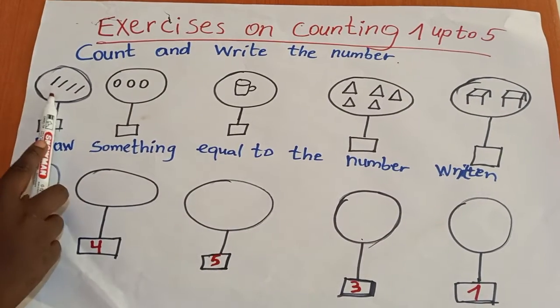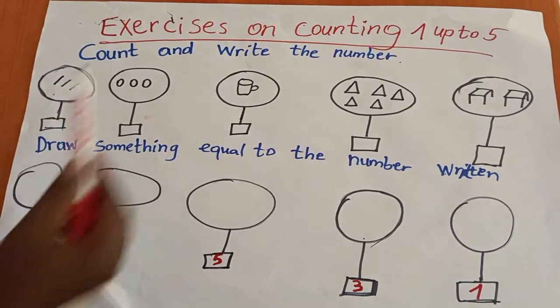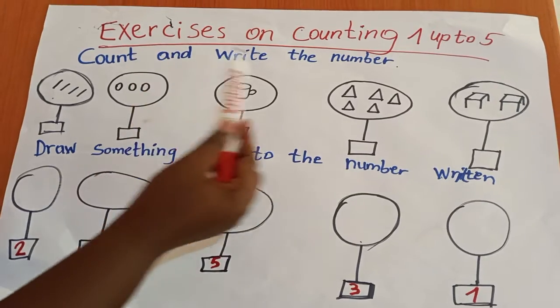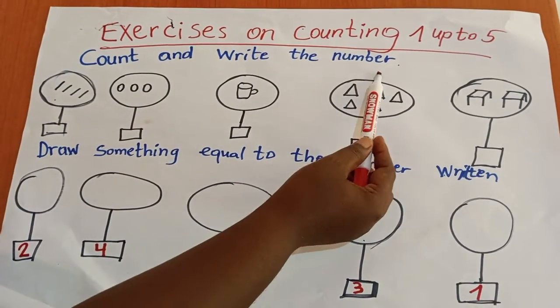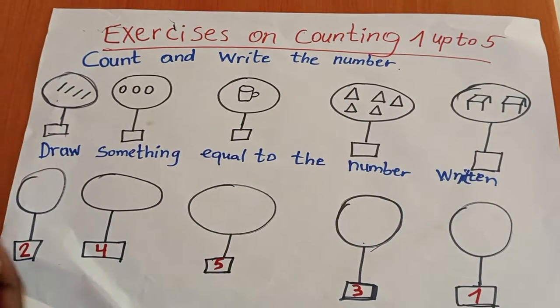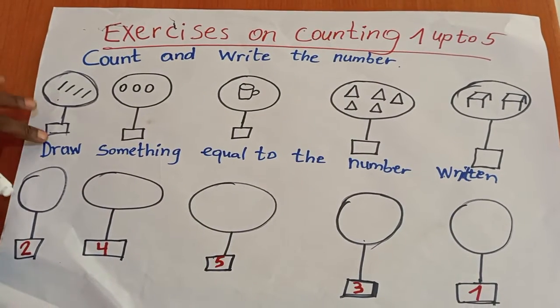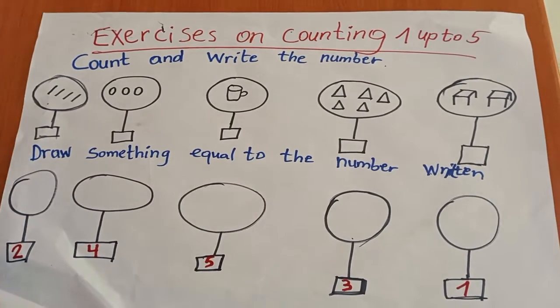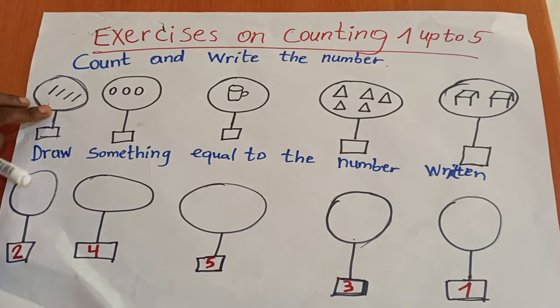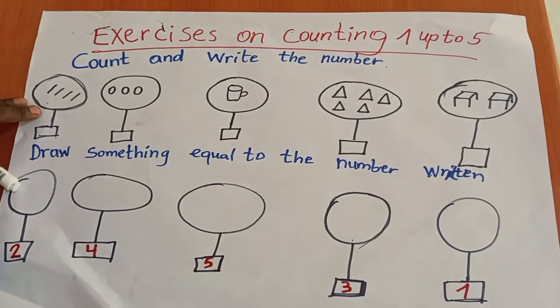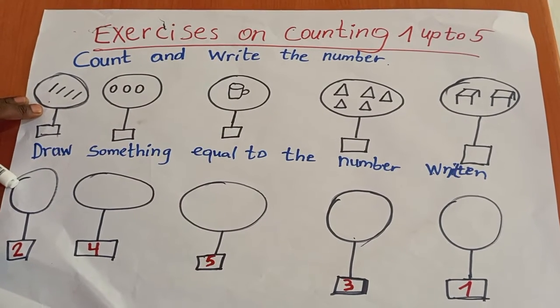The first exercise is to count and write the number. Here I am going to count oblique lines.